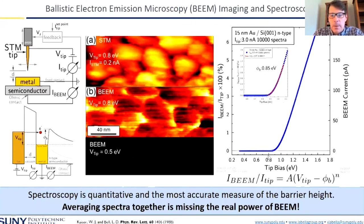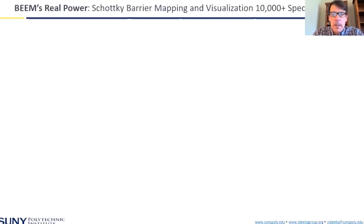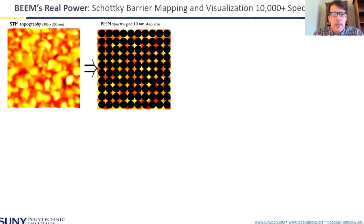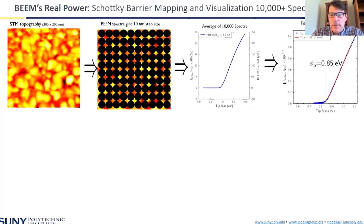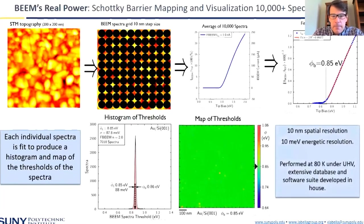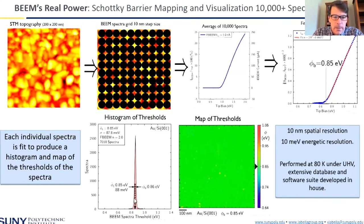You can also do spectroscopy — sit at one point, average a bunch of spectra together, ramp the bias up, and fit it to what's known as the Bell and Kaiser model to get the barrier height. It's a very accurate measure of the Schottky barrier height. Our group goes one step further: we actually do spectra mapping, taking 10 to 100 thousands of spectra on a grid over a surface to extract the barrier height and provide a map. We step at every 1 to 10 nanometers over a desired area. Here's a map of those thresholds showing slight fluctuations over a square micron region — 10 nanometer spatial resolution and about 10 meV energetic resolution — with a nice narrow distribution of thresholds. This is for gold on silicon, giving a nice interface.